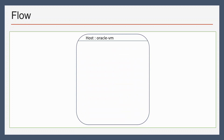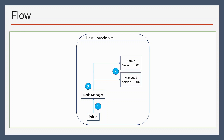Let's see the flow. Say we have a virtual machine — an Oracle VM — and inside that virtual machine we have an Admin Server and Managed Server running. Once this virtual machine is available again after a restart or any activity, the init.d program will initiate Node Manager as a service. Once Node Manager is started, it will recognize all the servers which were stopped unexpectedly and will try to start them again.